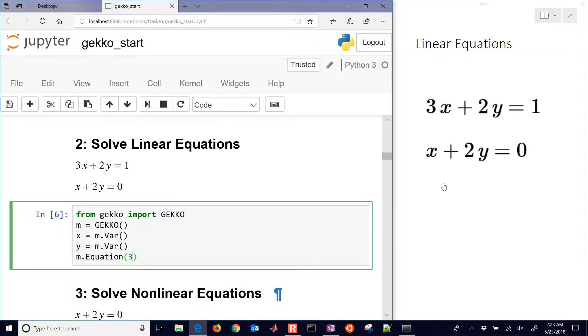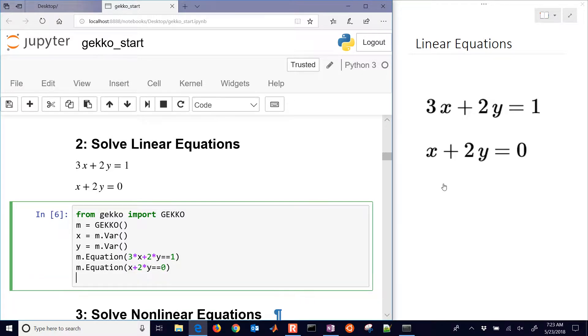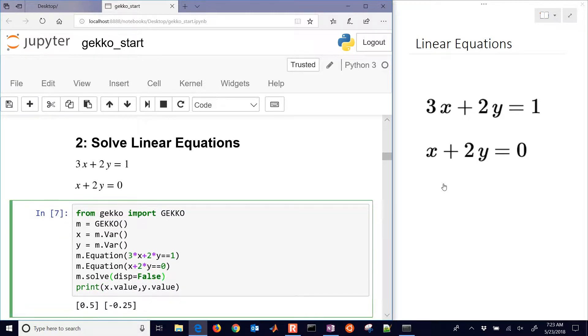And then we can set up our equations. We can either do it one at a time. 3x plus 2 times y, don't forget the double equals sign, and then we have another equation as well. And then we can solve this, and I'll do display equals false just so we don't see the solver output. And then we can print x value and y value. And if we run that, we get the solution.